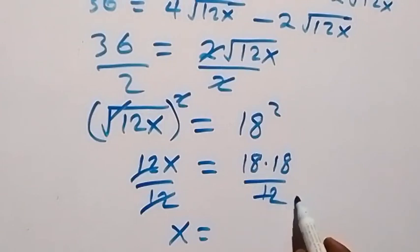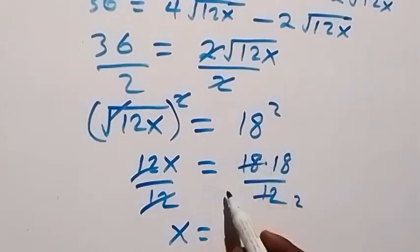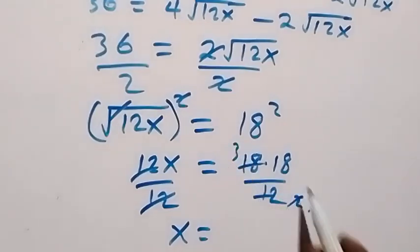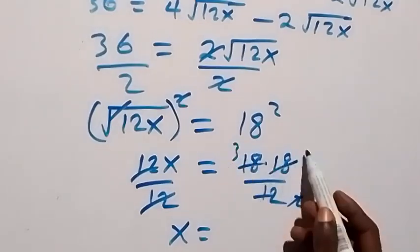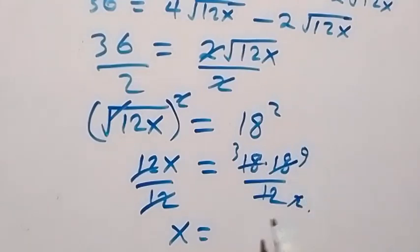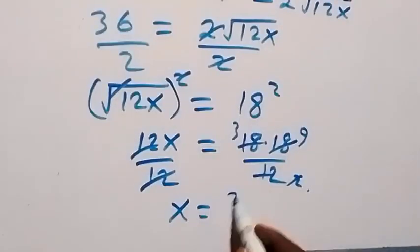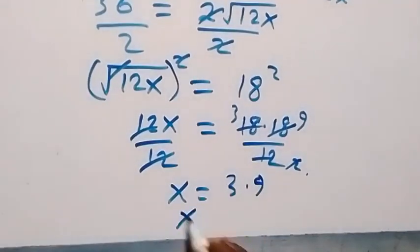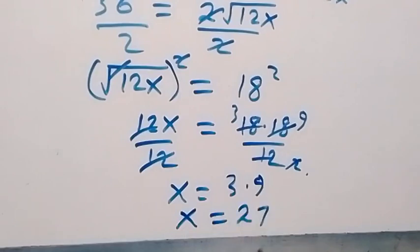So x equals 18 squared over 12. Simplifying: 18 over 12 — 6 goes into 18 three times and 6 goes into 12 twice — then 3 times 9 gives us 27. So x equals 27.